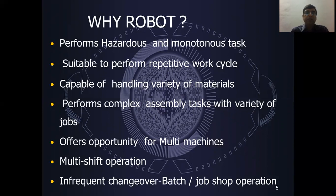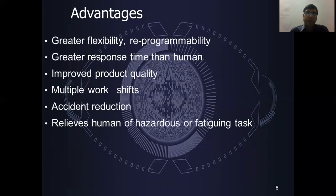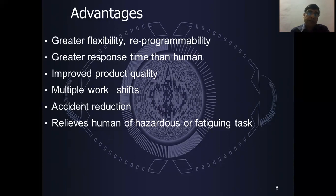With robots, we get multi-machine operations and multi-shift facility for 24 hours. If there are changes in job operations, the robot is very suitable. The advantages of using a robot include good flexibility, a good response compared to human beings, improved product quality, opportunity to work in multi-work shifts, accident reduction, and relief from arduous and fatigue tasks.